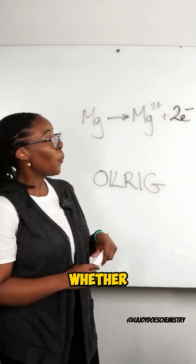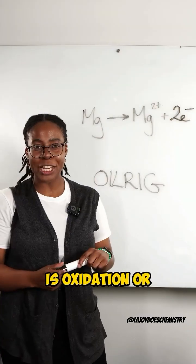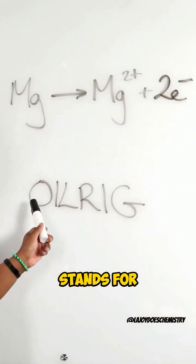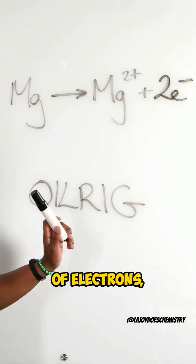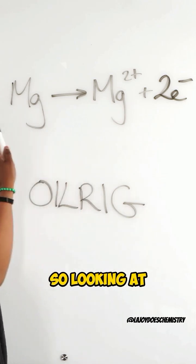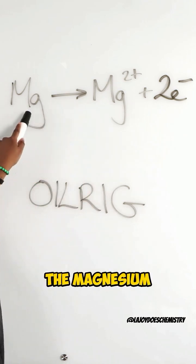Use this trick to explain whether this half equation is oxidation or reduction. OIL RIG stands for oxidation is the loss of electrons, reduction is the gain of electrons. So looking at this half equation, the magnesium has gone